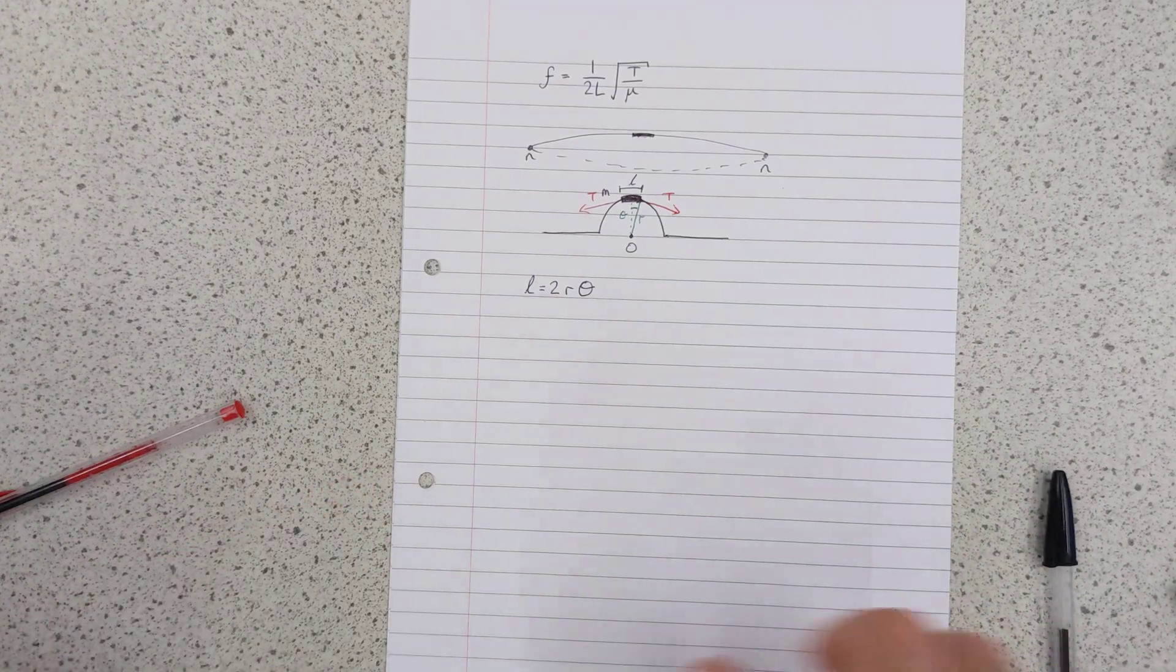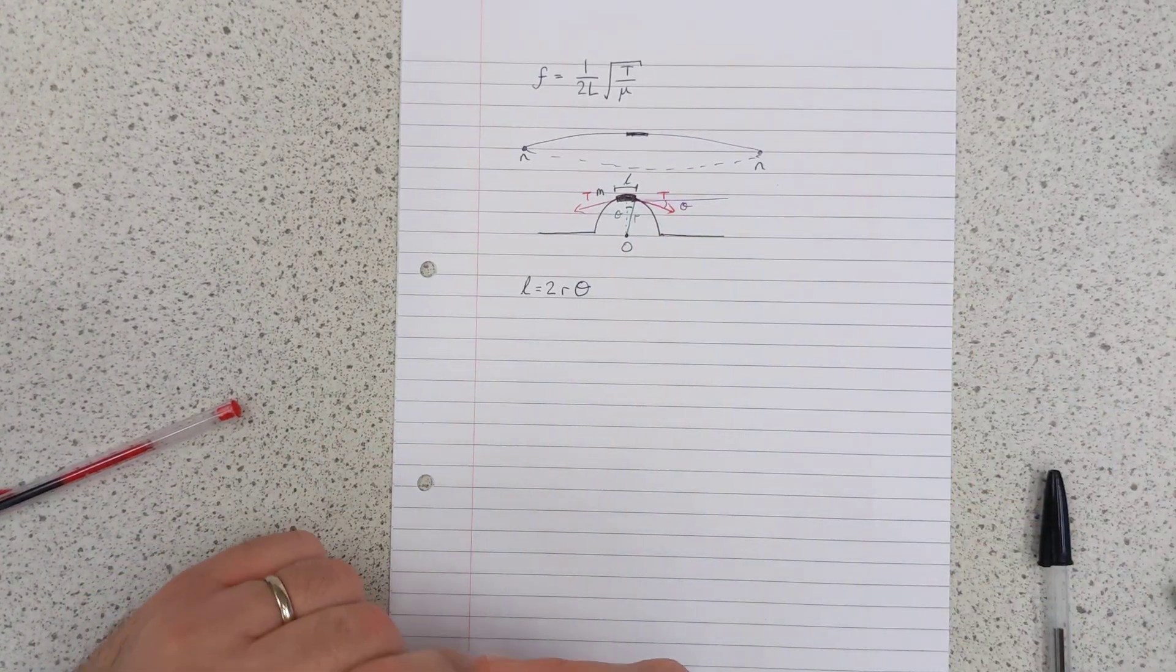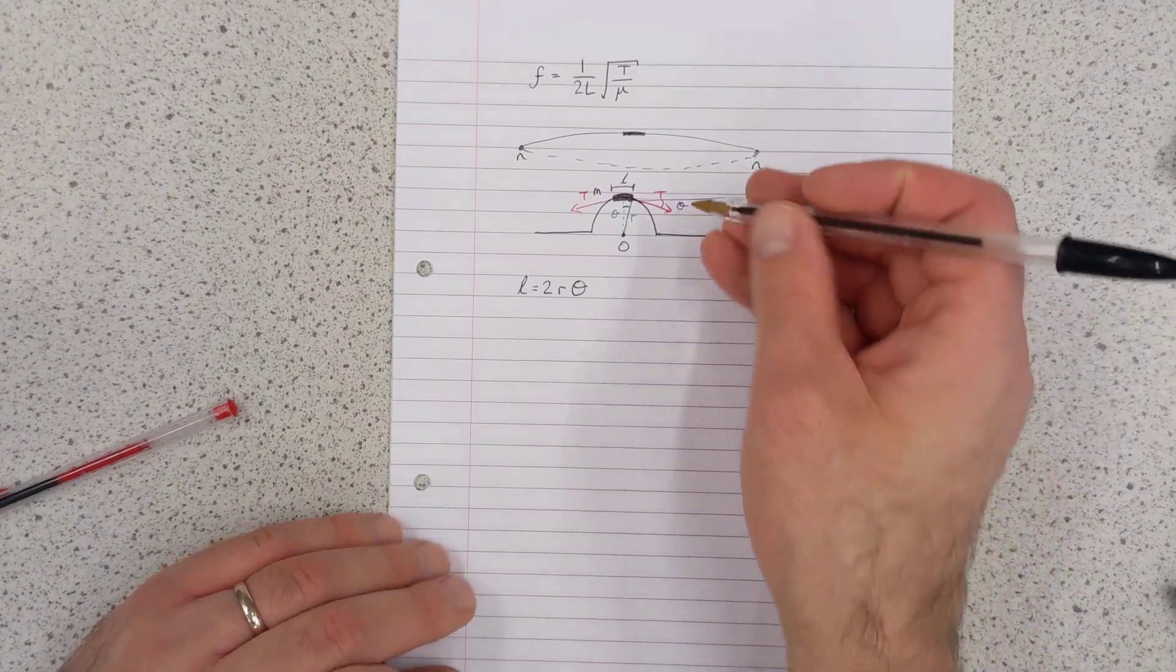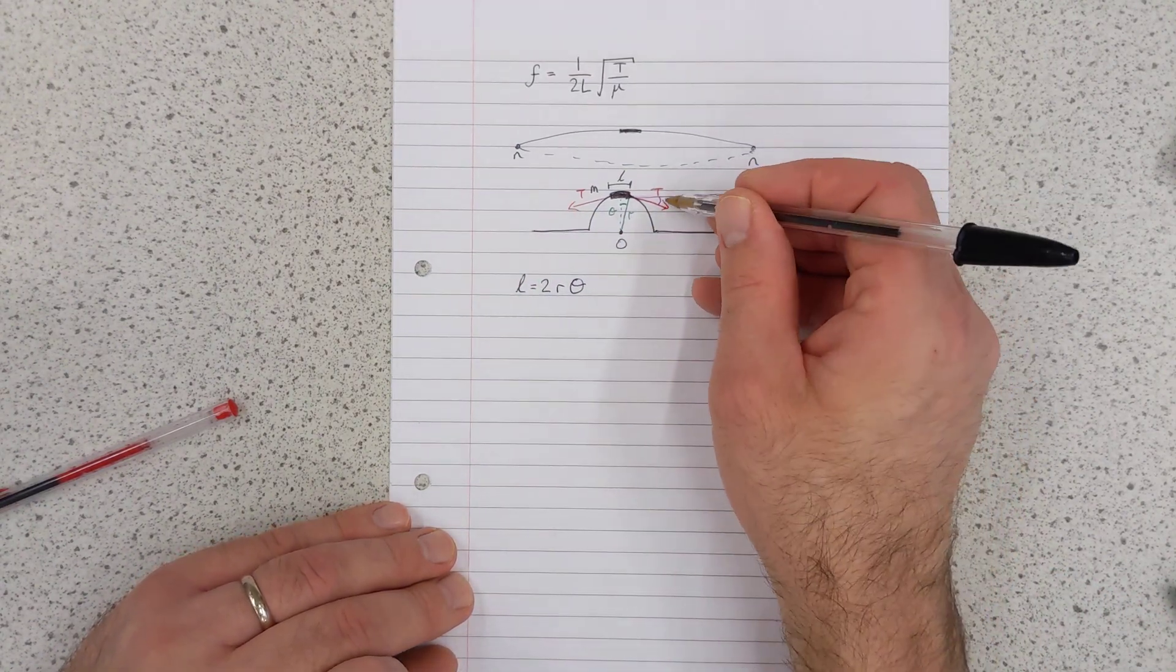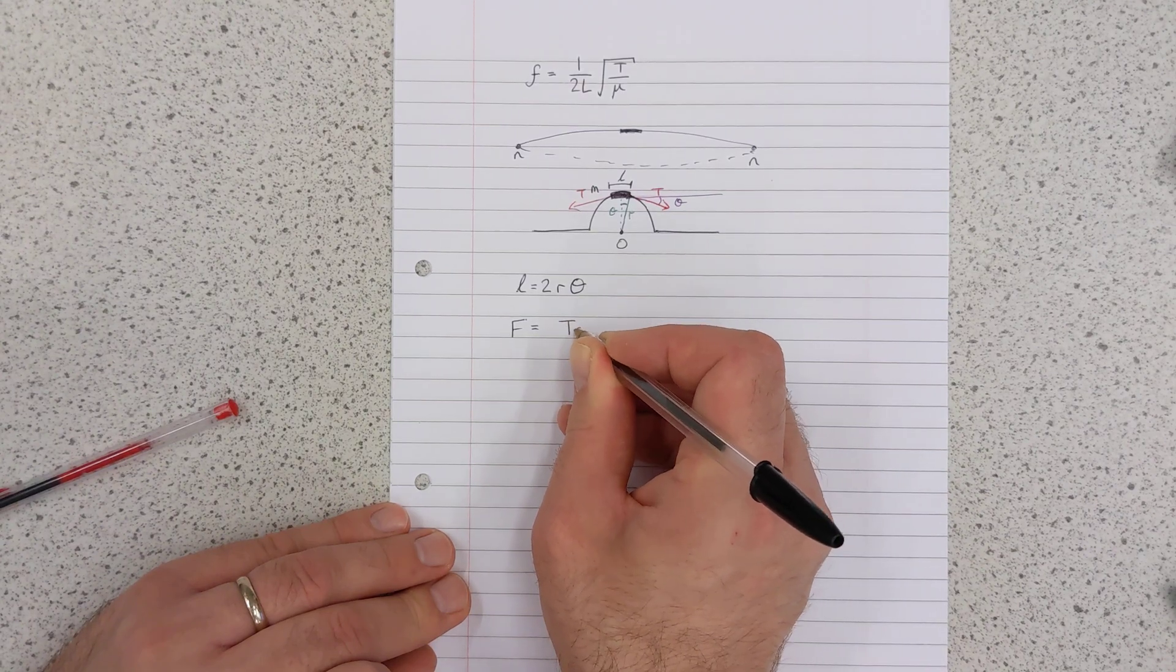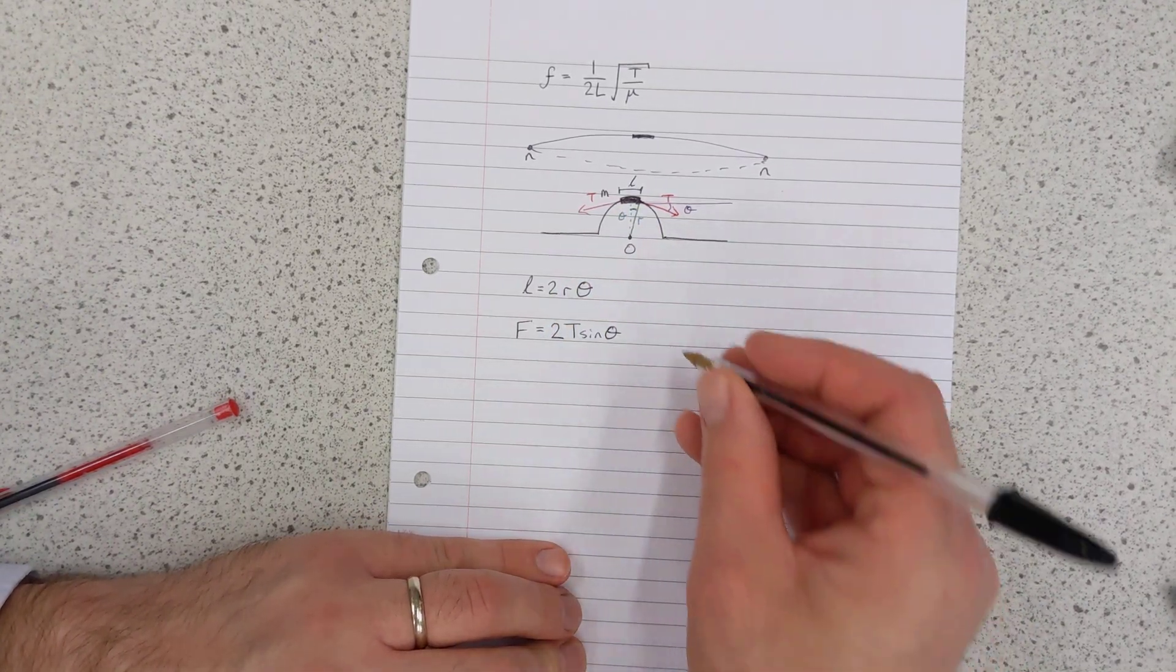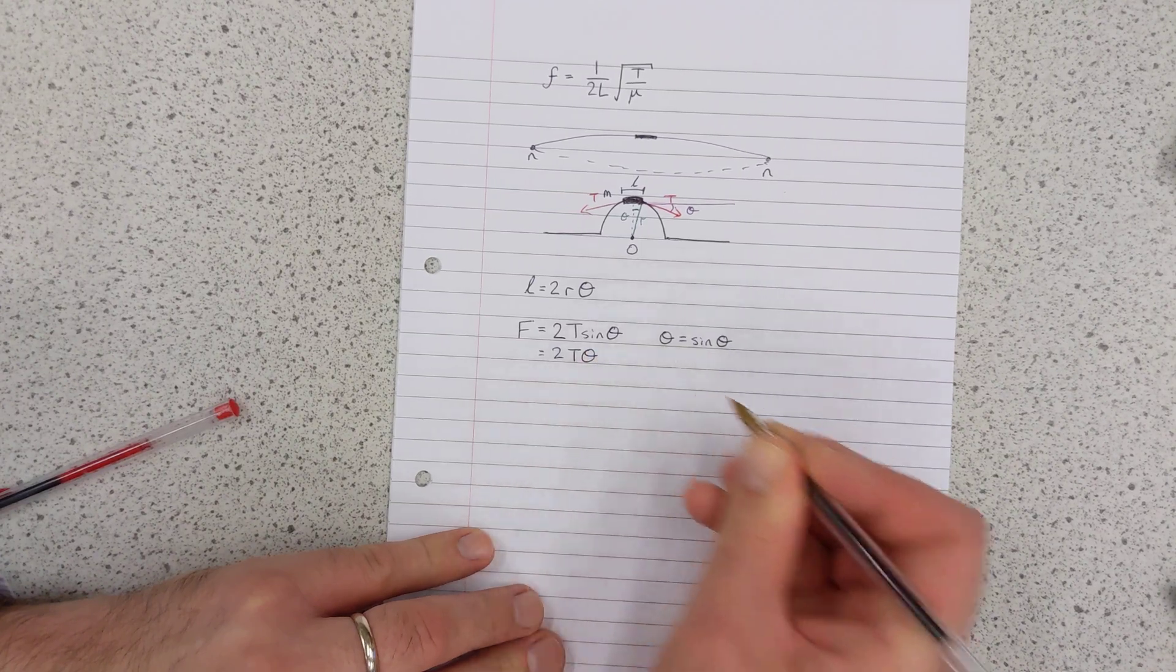Now, the tension, get a different colour pen out, is acting at an angle, theta, parallel to the string. So that theta is the same as that theta there. So we can resolve this tension, if we wanted to, to look at the component that's towards the centre of the circle. And there are two of these tensions, so we're going to double it. So the component towards the centre of the circle is going to be T sine theta. So our resultant force is going to be T sine theta. But there are two of them, so it's going to be 2T sine theta. And we can use a small angle approximation. If we consider L to be a small enough element, then theta will equal sine theta. And so this is just going to become 2T theta.